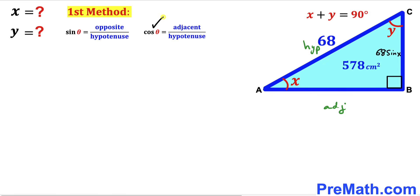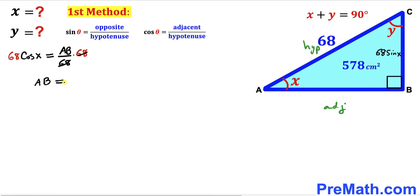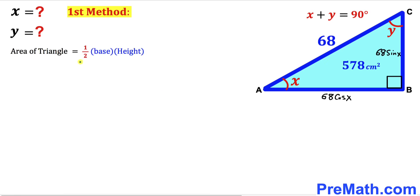Now using the cosine ratio, we can write cosine of x equals side AB divided by the hypotenuse 68. Multiplying both sides by 68 to isolate AB, our side AB turns out to be 68 times cosine of x.